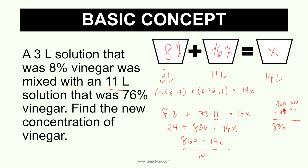So 860 divided by 14 would be around 61-something percent. I won't solve it fully since that's not our main point here — we're just saving time. What I want you to understand is the contrast between the different problem types.